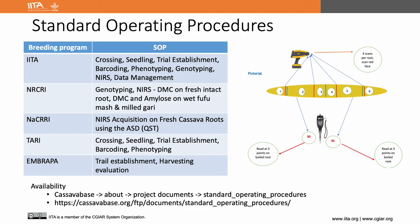We work on developing standard operating procedures for different areas of research. This is the list of SOPs developed from different breeding programs, which are available on CassavaBase for the global cassava community. We have experienced that SOPs play an important role as they help the breeding program to easily perform any specific task by following step-by-step instructions. This is an example of the NRCRI protocol for phenotyping fresh cassava roots using ASDQST and phenotyping boiled roots using a penetrometer.